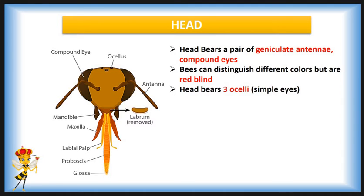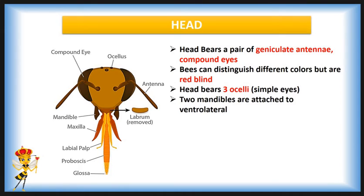The ocelli are located on the top portion of the head and recognize the degree of light. These are the antennae, and this part is called compound eyes on the lateral side. Two mandibles are attached to the ventrolateral part of the head capsule.